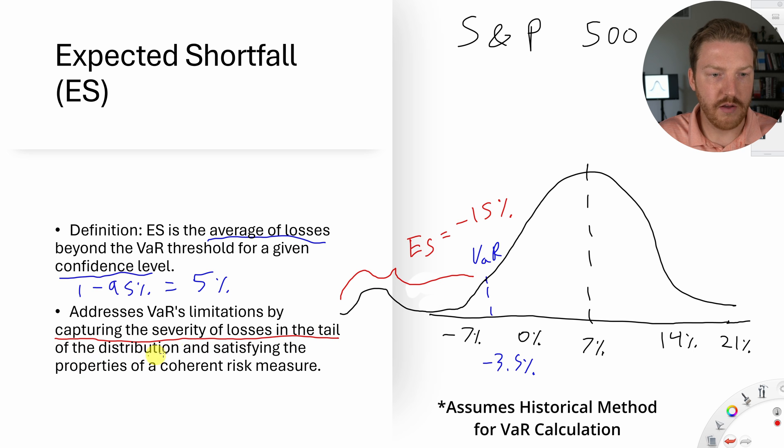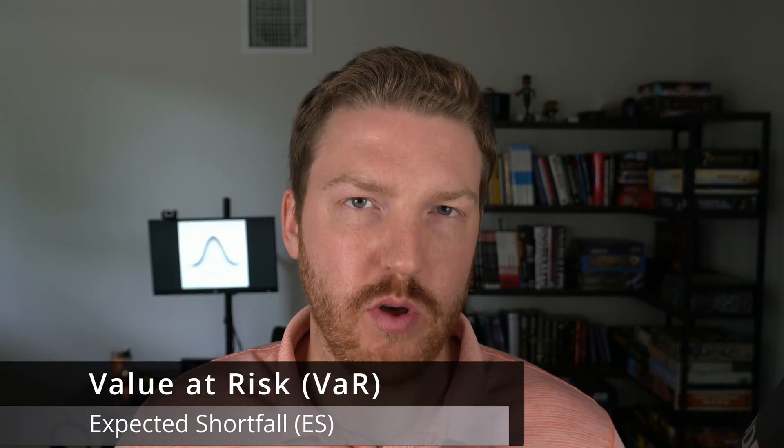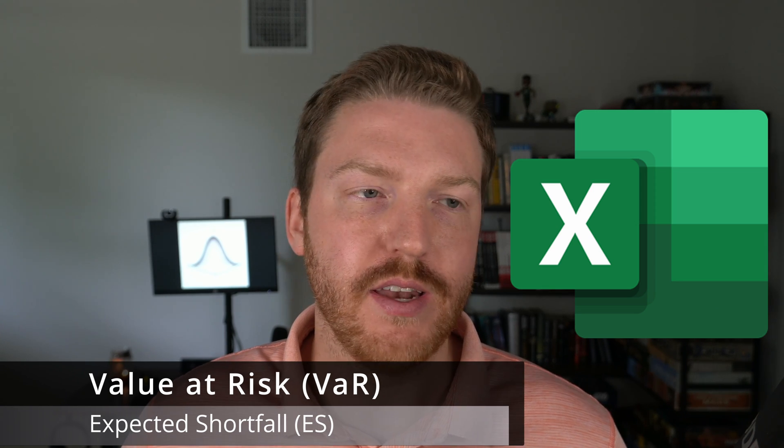So expected shortfall is addressing the limitations that VaR has by capturing the severity of the losses in the tail of the distribution, which makes it satisfy the properties of being a coherent risk measure, which the financial regulators are requiring. To really nail this concept home, let's look at an example where we'll calculate value at risk and expected shortfall in Excel.